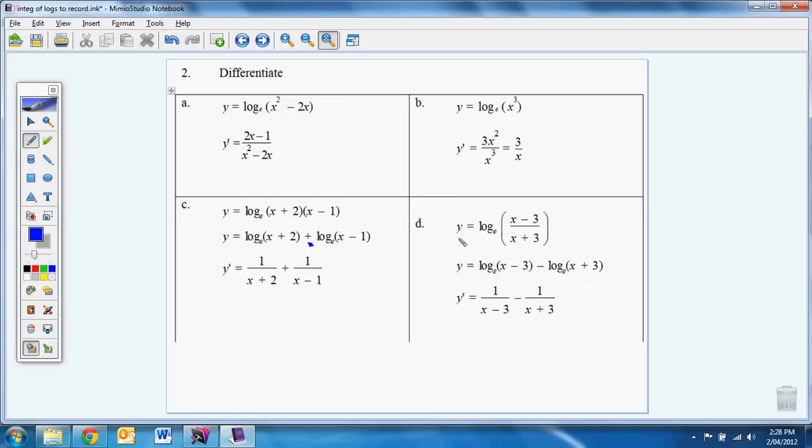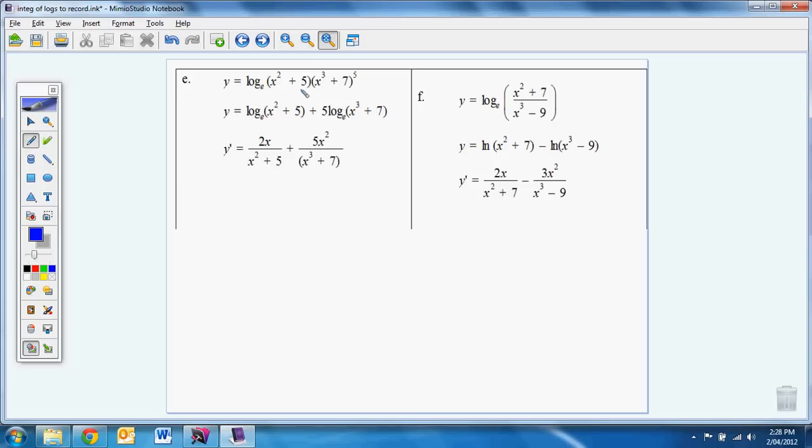So really using our log laws, this is where they start to pay off and make life very easy. We can see the same thing with E. Instead of using the product rule there, split them up. It's multiplication, so we become addition. And because we have the 5 up there, it comes down in front of the log. So we derive that function, which is 2x over the function, and 5 times the derivative of that function, which is x cubed. Actually, it should be 3x squared, so it should actually be a 15 in front. So it's going to be over that function, x cubed plus 7. So 15x squared over x cubed plus 7.